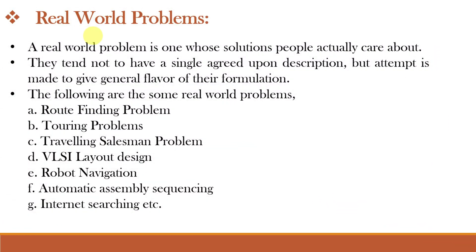A real world problem is one that matters to the people and has practical importance. These problems usually don't have a single clear definition, but we try to describe them in a general way to understand their nature. Some examples of real world problems are: Route finding problem, which finds the best route to a destination; Touring problem, which means planning a tour with multiple stops; and the Traveling Salesman Problem, which means finding the shortest route to visit multiple locations. These three are similar to each other.